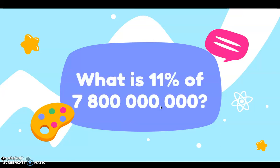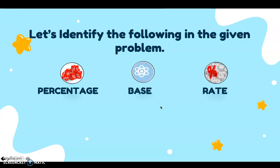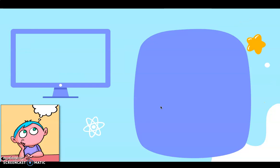Here is our given problem: what is 11 percent of 7 billion 800 million? This comes from an interesting fact that 11 percent of people are left-handed, and based on the 2020 world population of 7.8 billion. This time we are going to identify the percentage, the base, and the rate, but let's define these terms first.